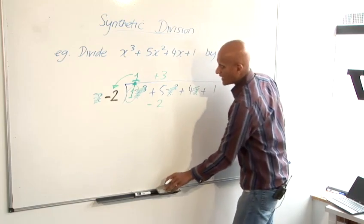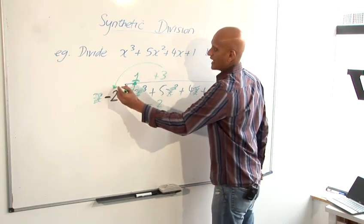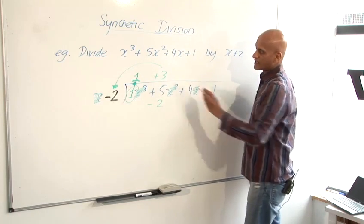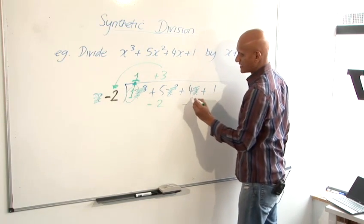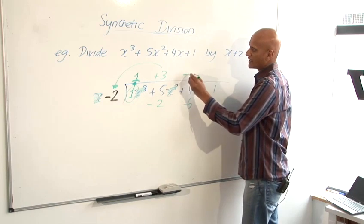And then do the same thing again. Multiply that into there. So, 3 times minus 2 gives me minus 6. And again, adding these 2 together gives me minus 2.